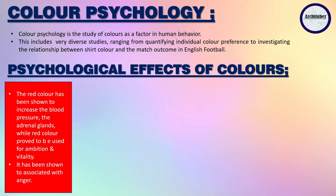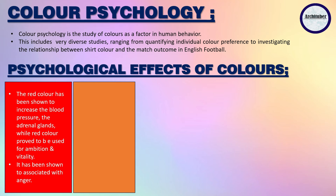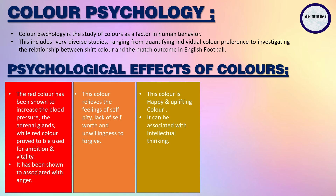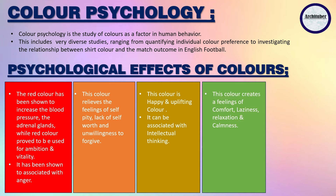The color red has been shown to increase blood pressure and adrenal glands, while red is associated with ambition and vitality, but also with anger. Orange relieves feelings of self-pity, lack of self-worth and unwillingness to forgive. Yellow is a happy and uplifting color that can be associated with intellectual thinking. Please make notes — this is going to be very important for your NATA aptitude exam.